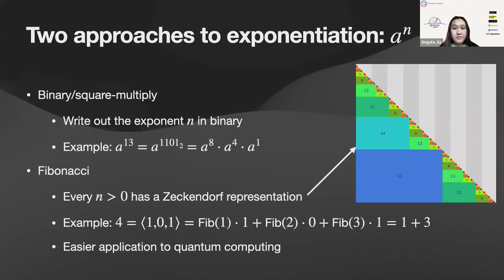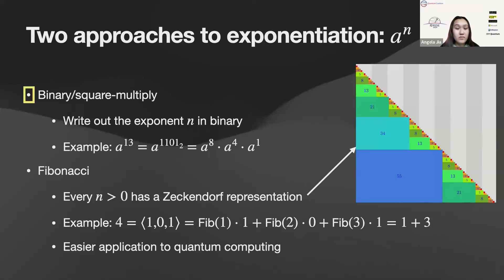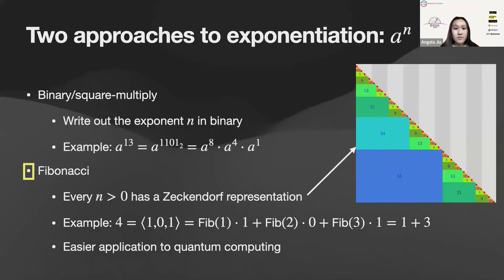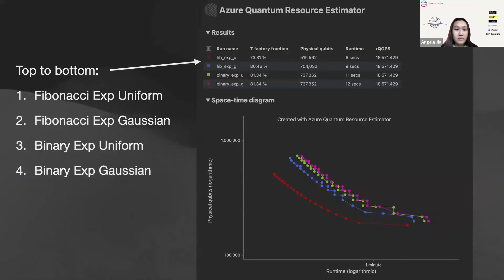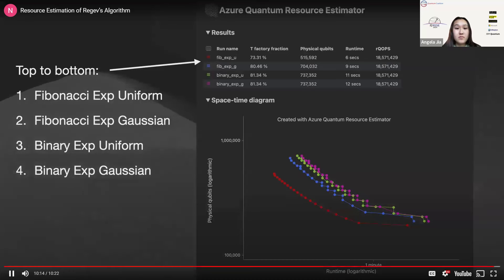They also explored some ways to implement quantum modular exponentiation. A to the n can be computed much faster than n-1 multiplications — if we write n in binary, we only need to perform at most log n multiplications. Binary exponentiation is at the core of that idea. Another technique uses Fibonacci numbers to exponentiate, relying on a Zeckendorf representation. They profiled both binary and Fibonacci exponentiation each with a uniform or Gaussian distribution, and noticed that the choice of base significantly impacts runtime. This validates Regev's strategy of choosing small primes as the base. The best performing method is Fibonacci exponentiation with uniform distribution.